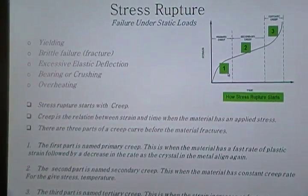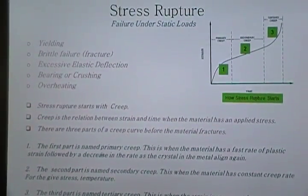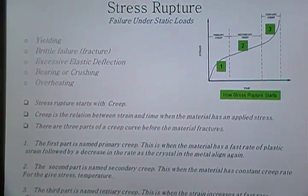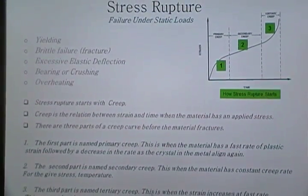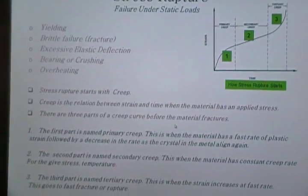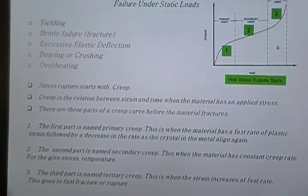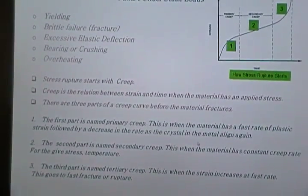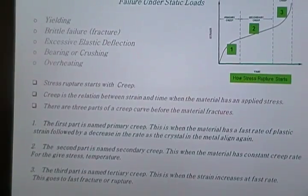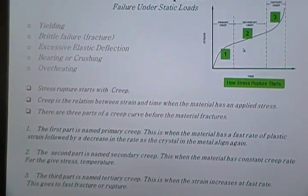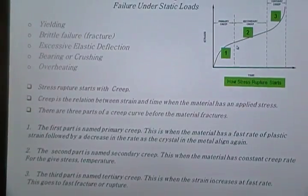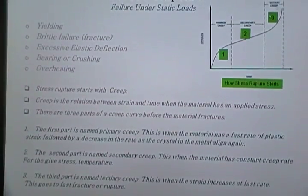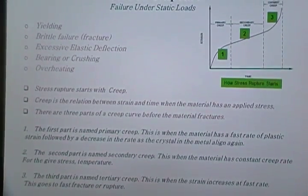If you see the graph, the first part is named primary creep, the second is secondary creep, and the third is tertiary creep. In the first stage, the rate of plastic strain decreases as the crystal structure in the metal aligns. When the alignment of atoms or metal materials becomes disaligned, the secondary creep starts. In the tertiary stage, fracture happens.